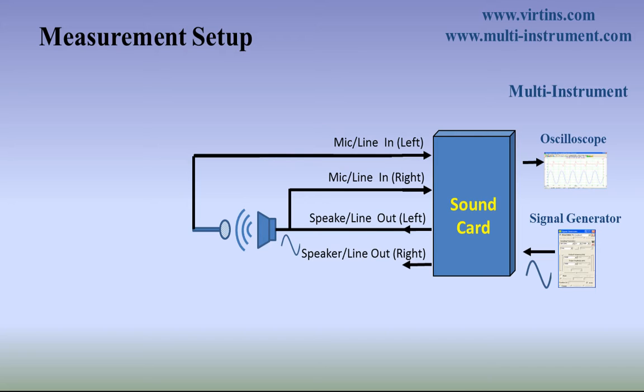As the propagation of the sound from the speaker to the microphone takes time, compared with the reference sine wave in the right input channel, the sine wave captured by the microphone in the left input channel will have a phase lag of phi 1. This phase difference contains the contribution from the disparity of the two signal paths of the sound card as well.